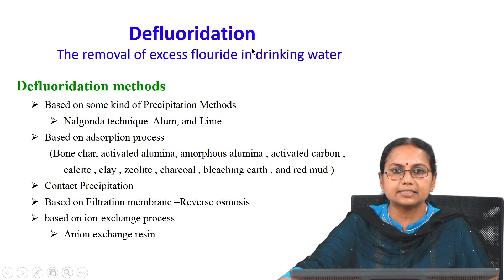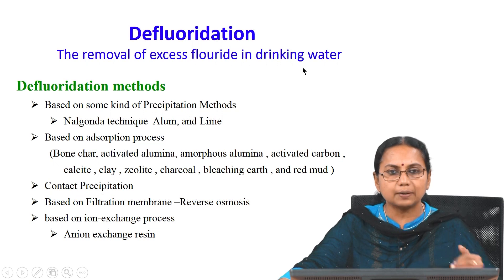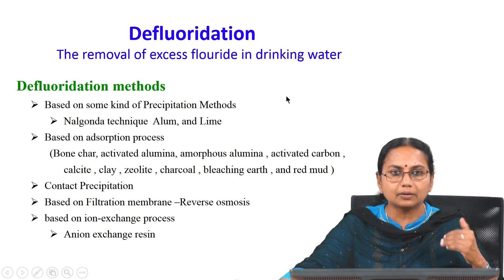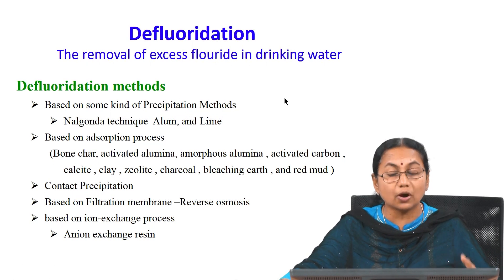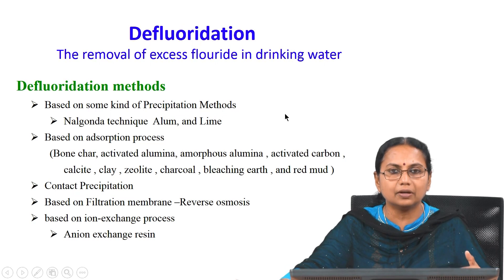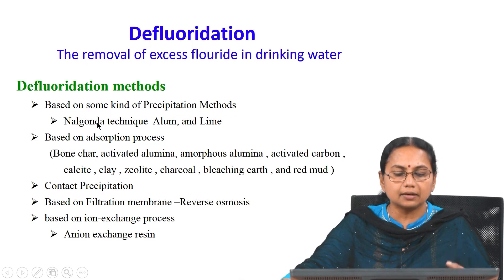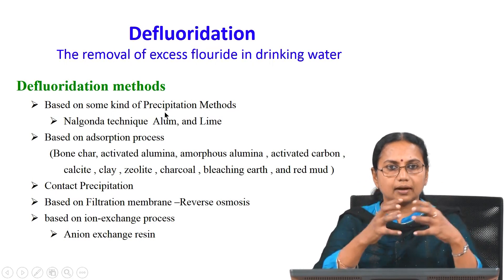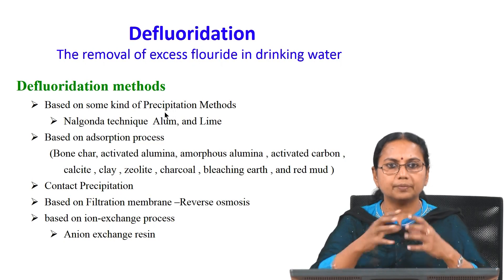Defluoridation is the term used for removal of excess fluoride in drinking water. As per the Bureau of Indian Standards, the permissible fluoride concentration is 1 mg/L and arsenic is around 0.01 mg/L — a very low concentration. Defluoridation methods include precipitation, where fluoride gets adsorbed onto the precipitate.